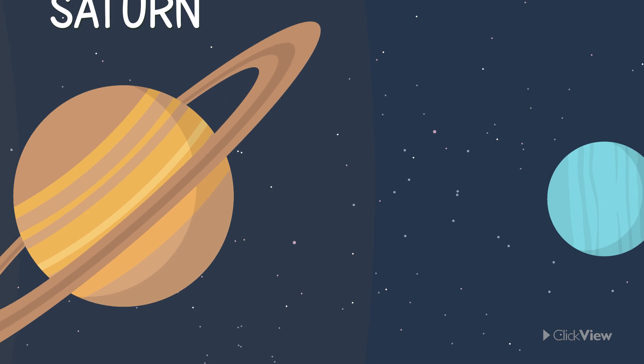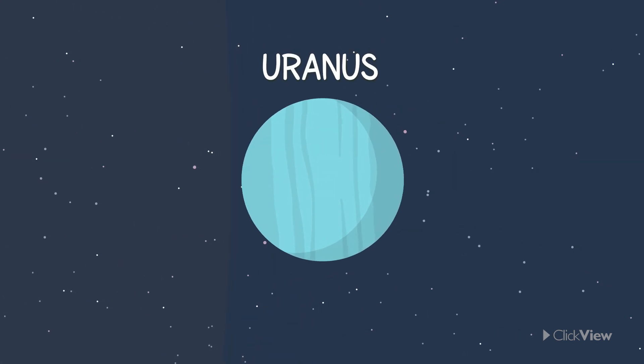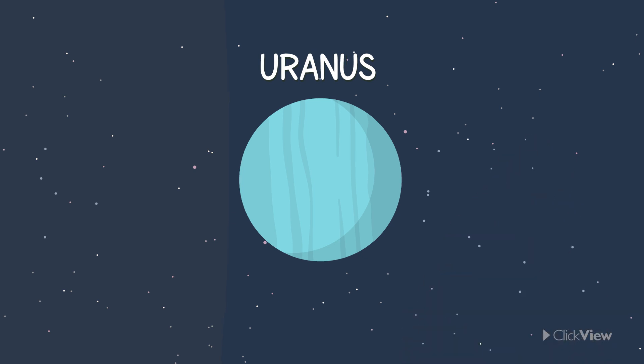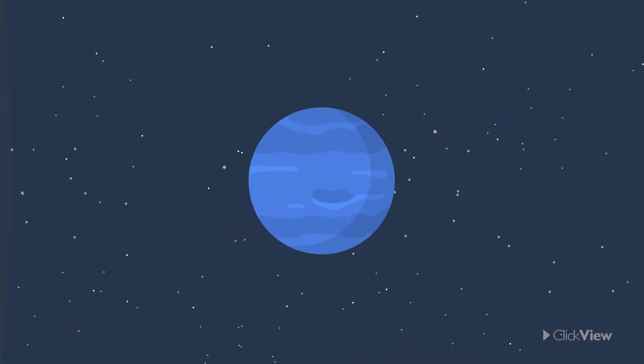The seventh planet from the Sun is Uranus. This was the first planet to be discovered. It was first seen by William Herschel more than 200 years ago.